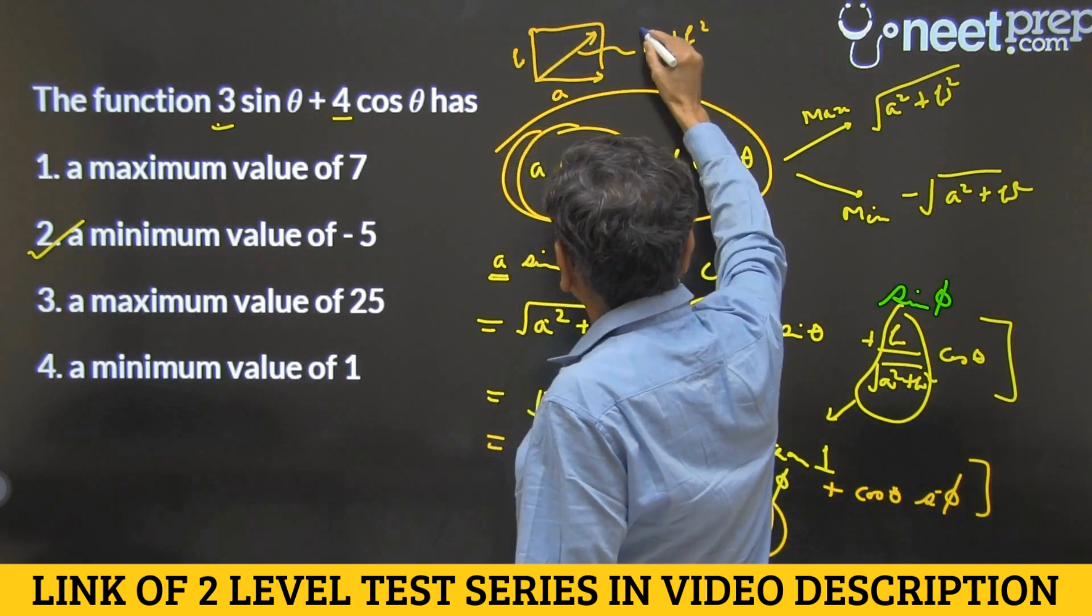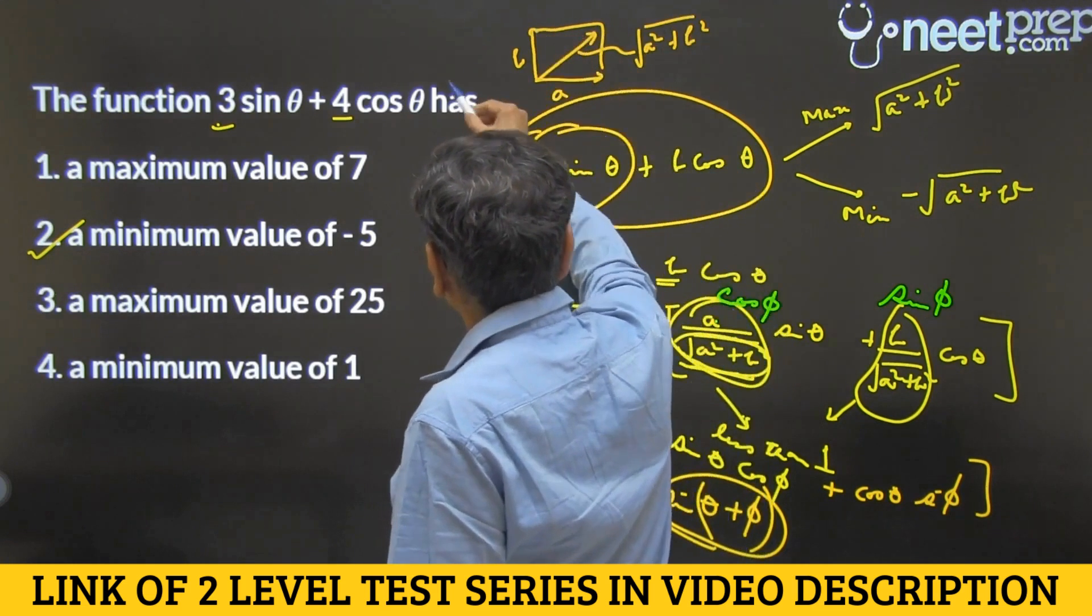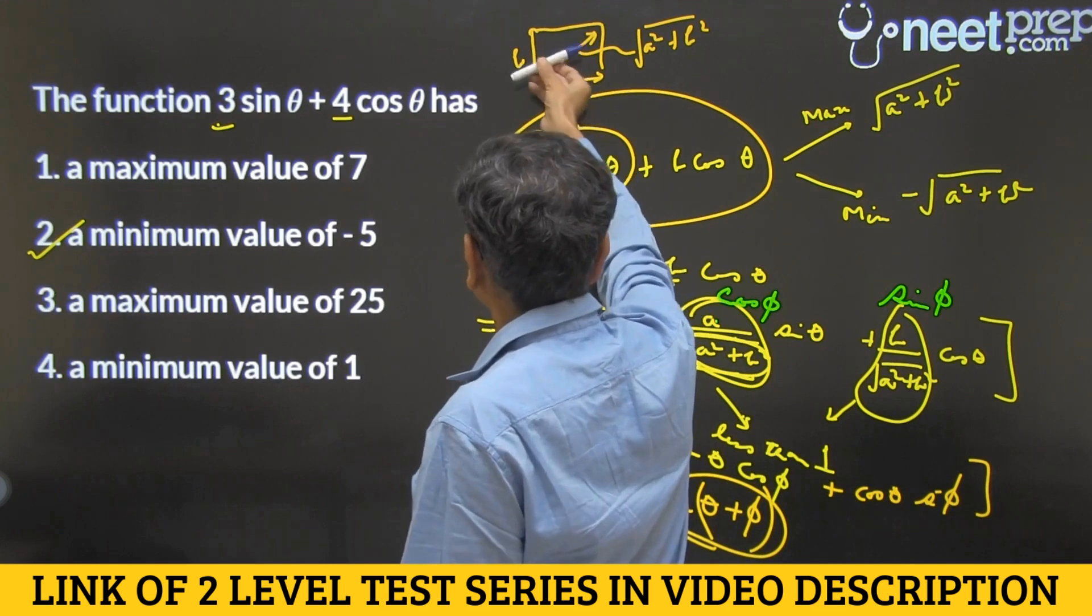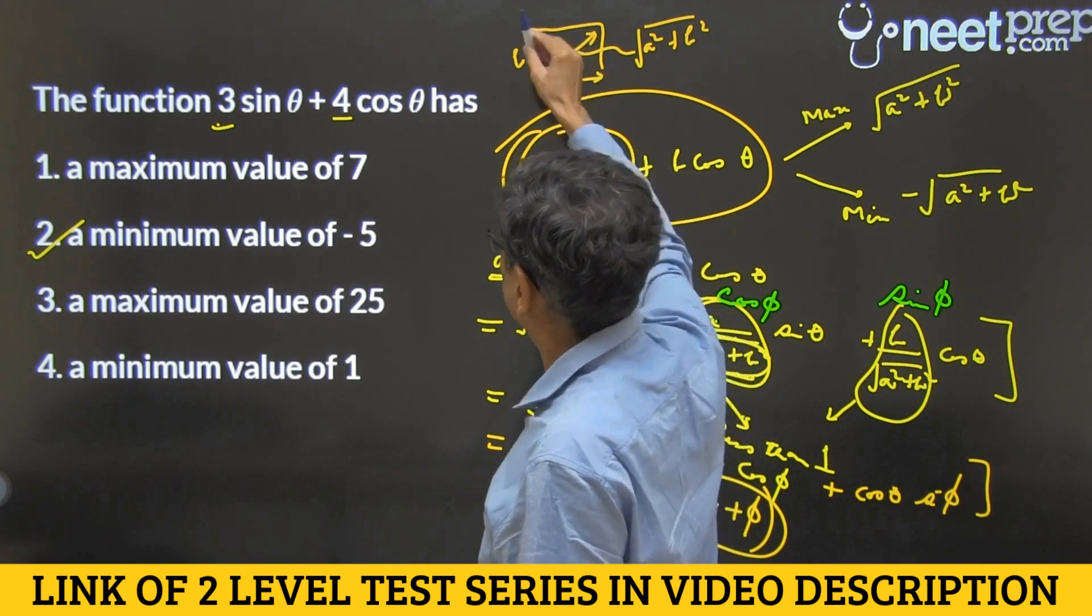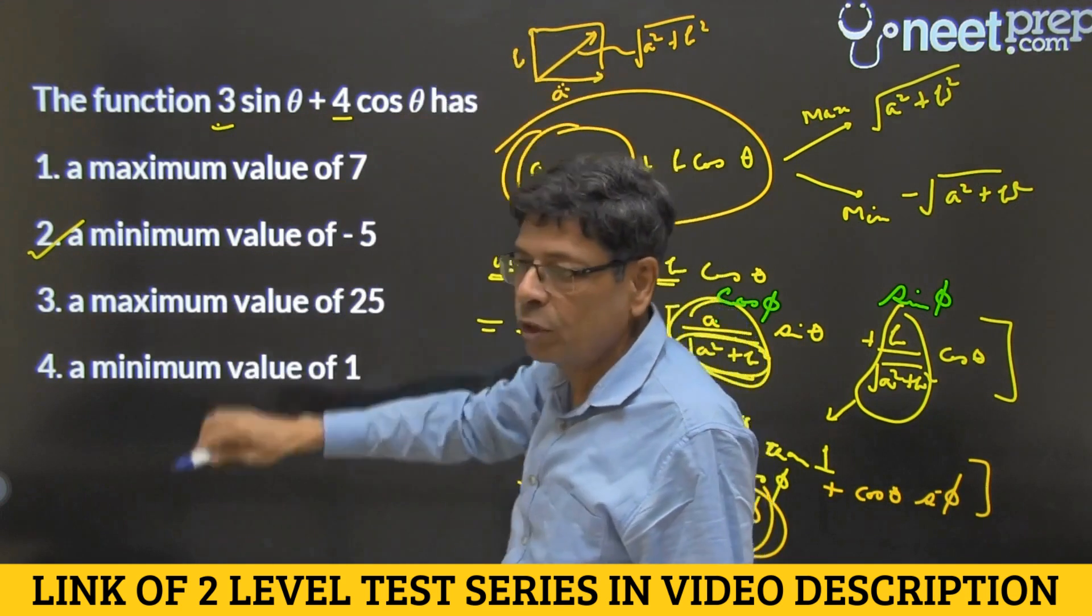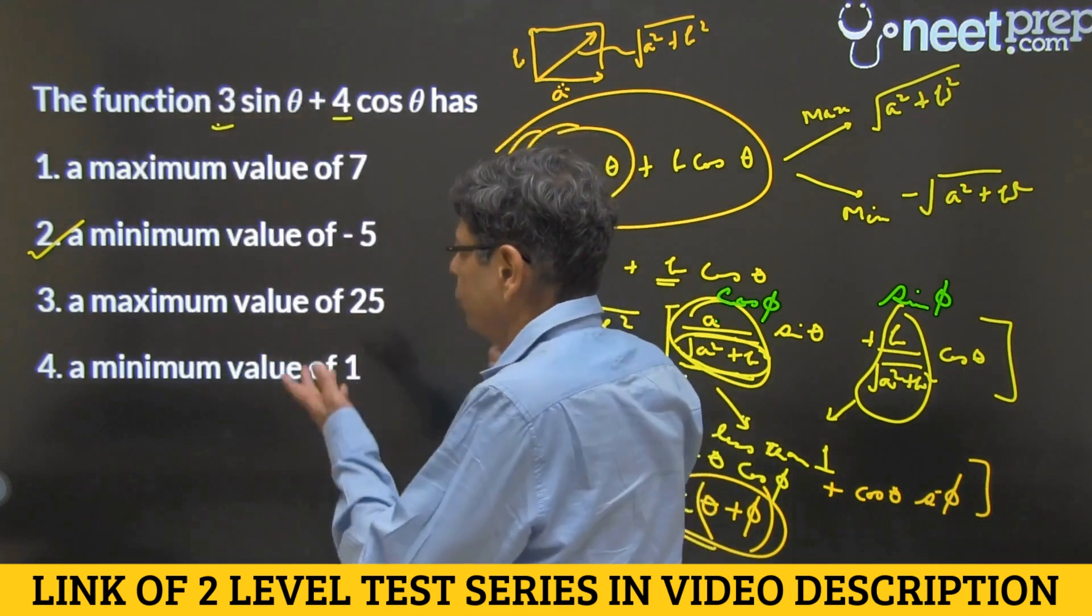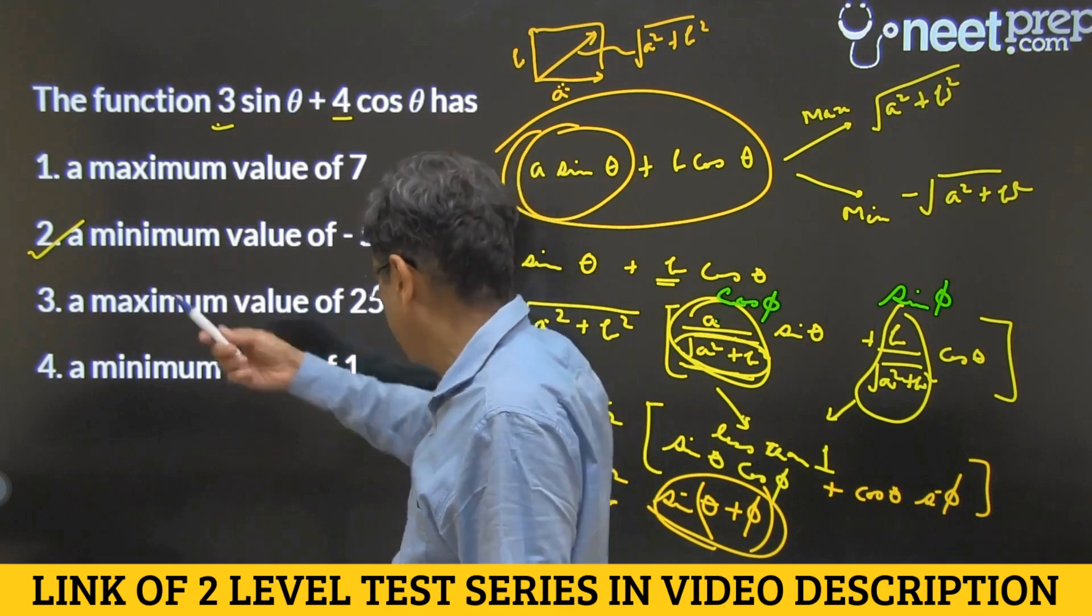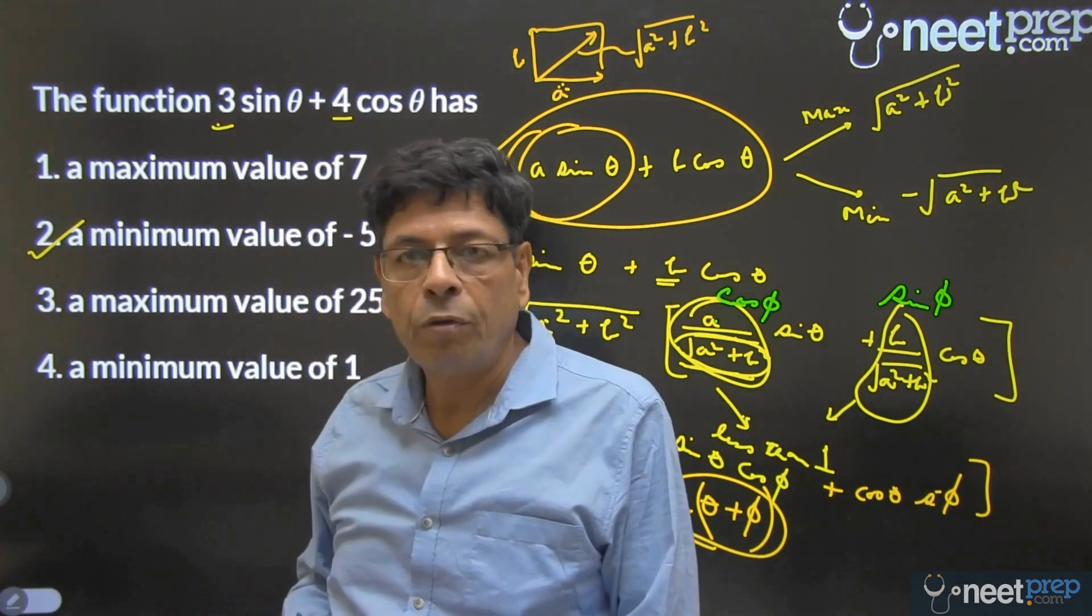And as the phasor rotates like this and its projection is taken, let's say on the x-axis. So, when the phasor is flat like this, the projection is maximum. When the phasor is the other way around, projection is minimum. And its value is -√(A² + B²). Either any of these 3 ways you could employ and arrive at answer of option 2.